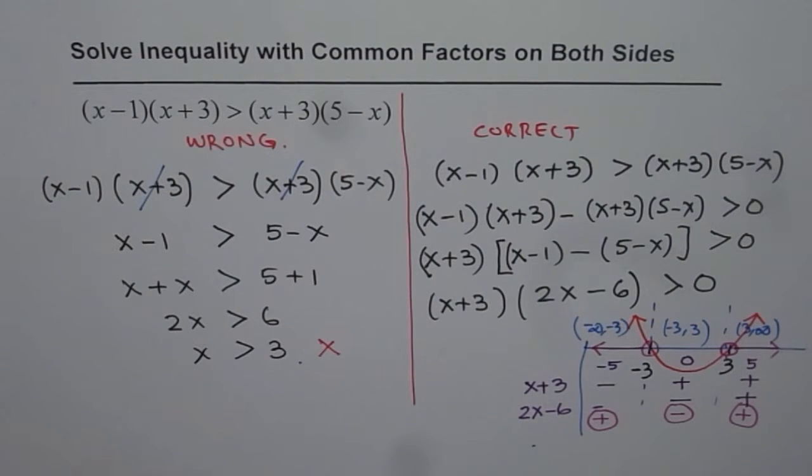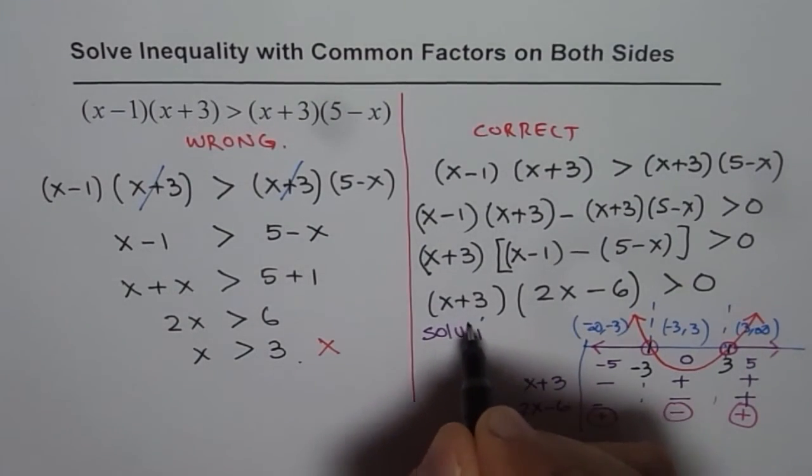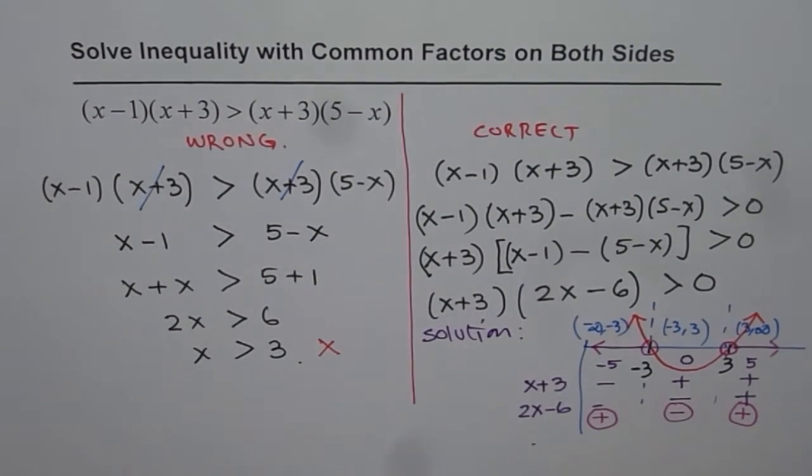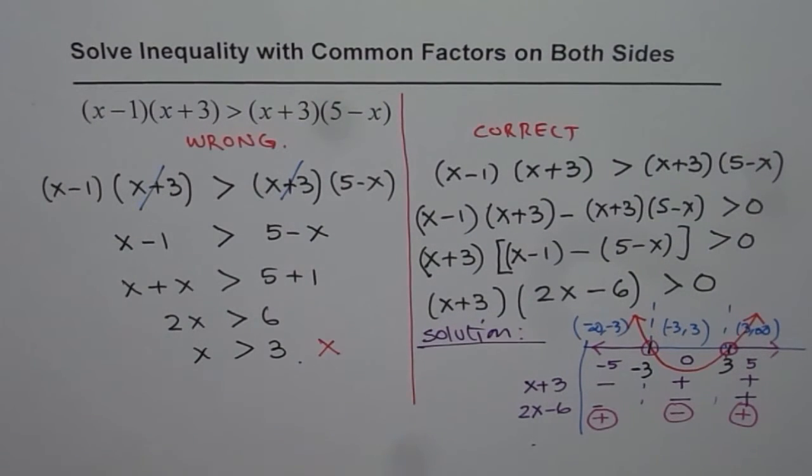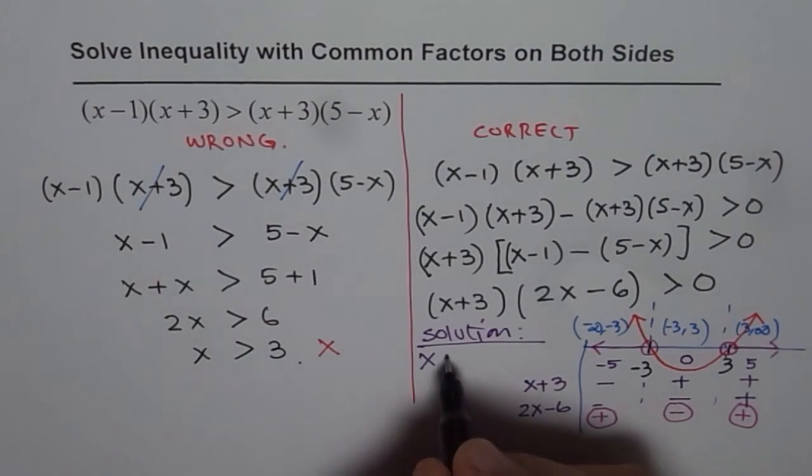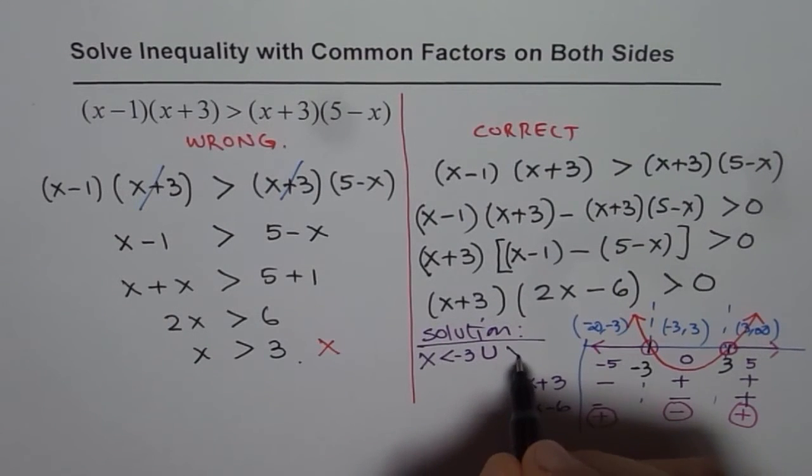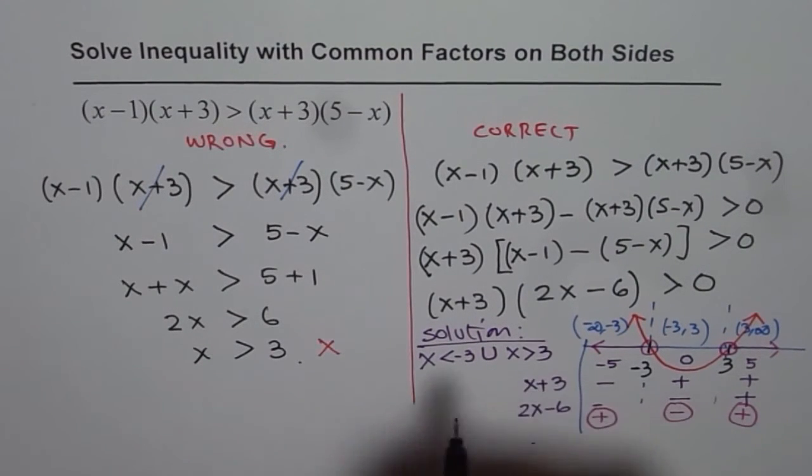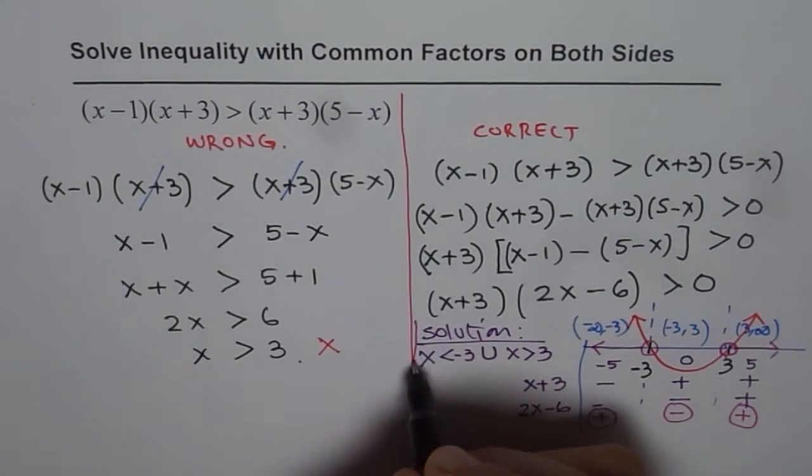The solution here is - let me write down the solution. Either way you can approach and get the solution. The second important thing is that the solution is not just x > 3. The solution is x < -3 union x > 3. So we have two sets of solutions for this question.